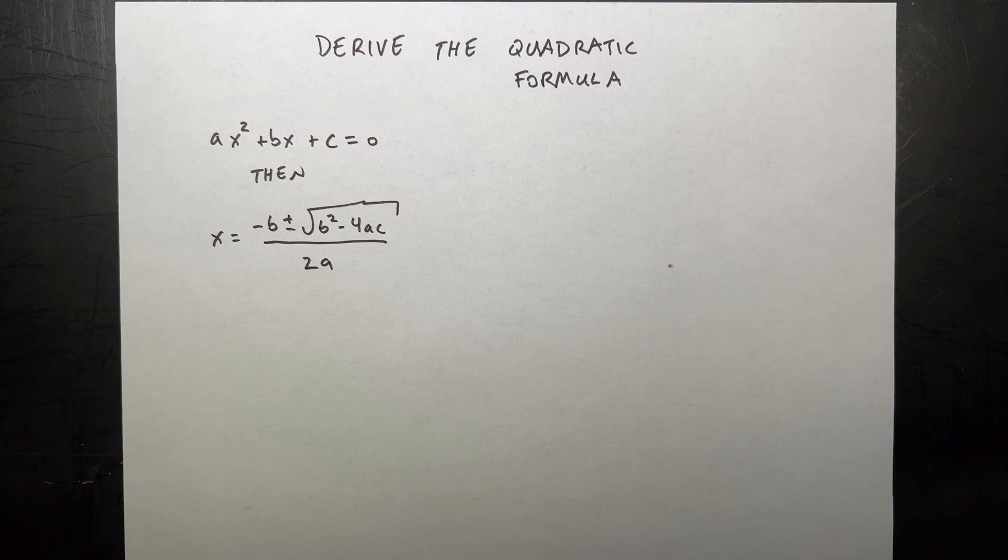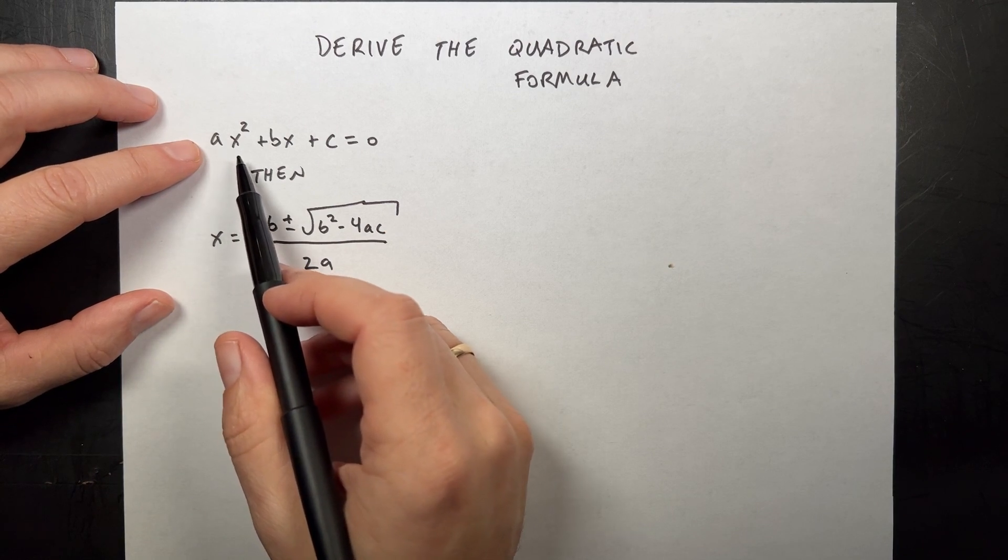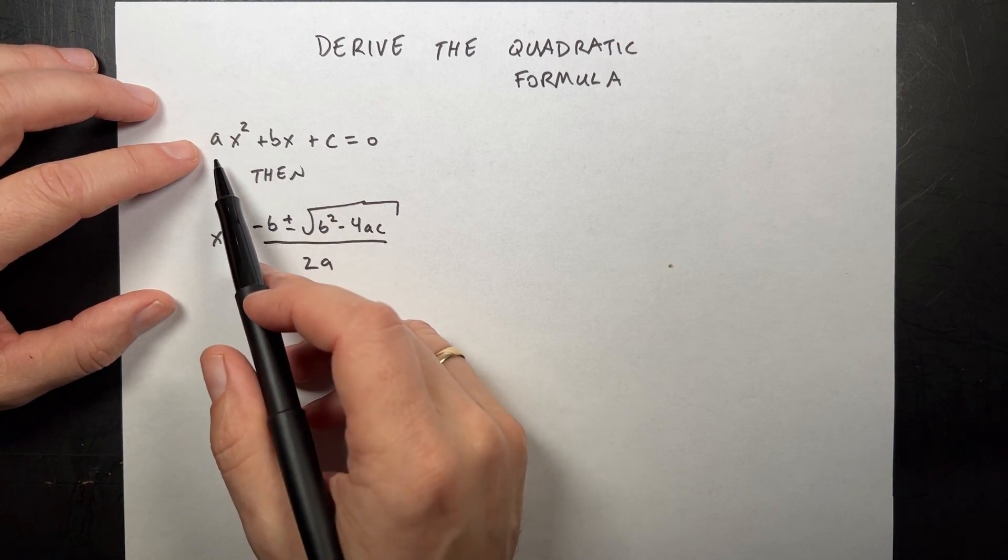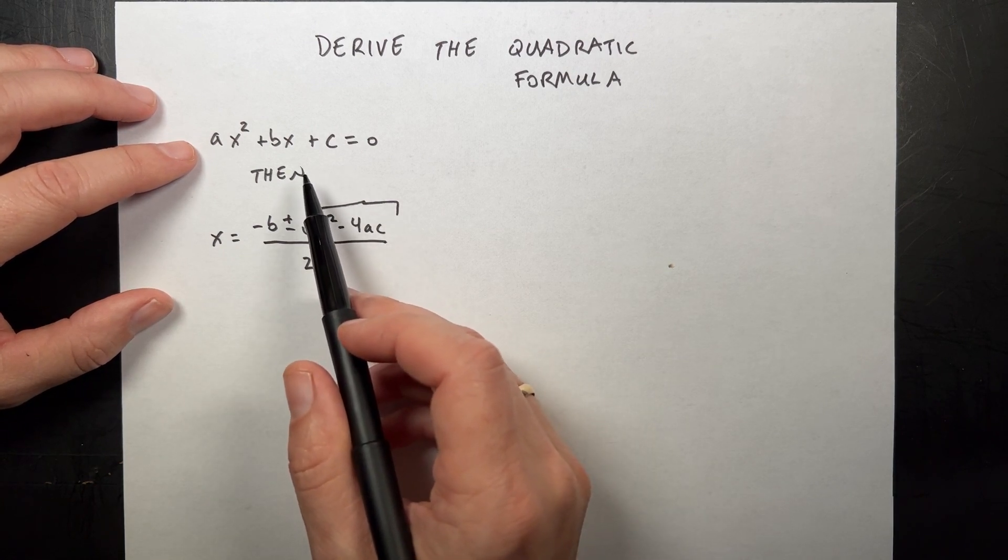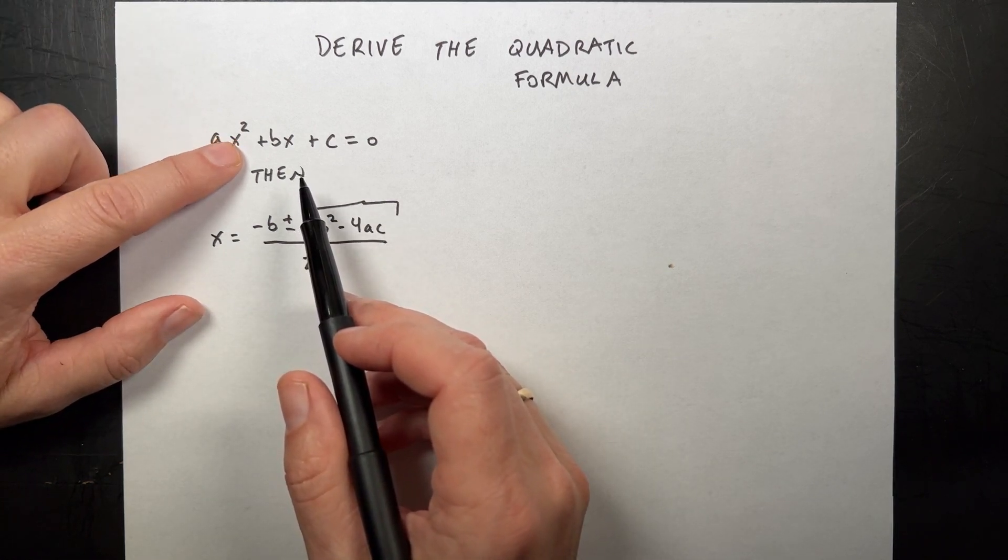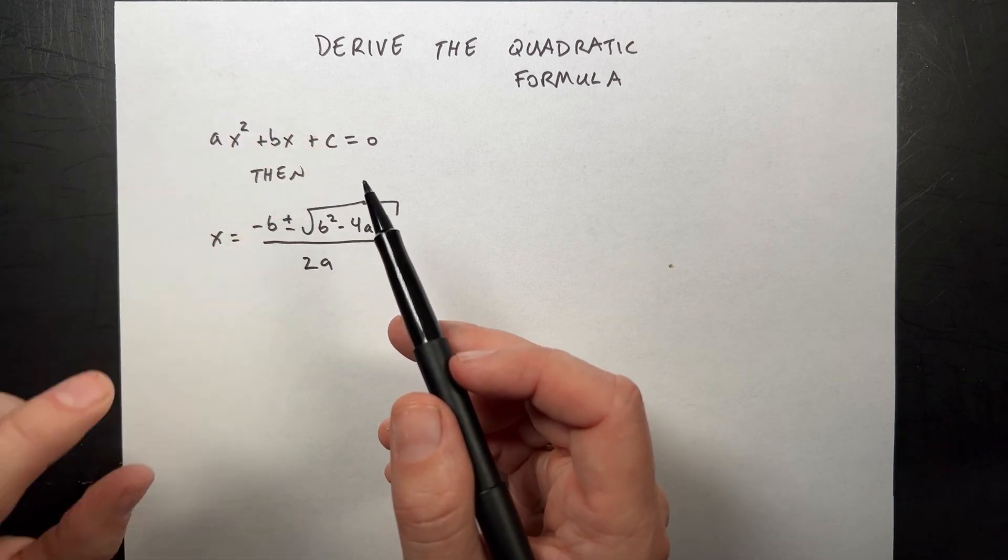Just for fun, let's derive the quadratic formula. What is the quadratic formula? So this says that if I have an equation that looks like this, ax squared plus bx plus c equals zero, which says that some constant times a variable squared plus some constant times a variable plus a constant equals zero.